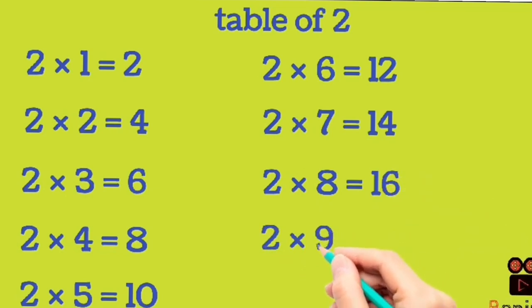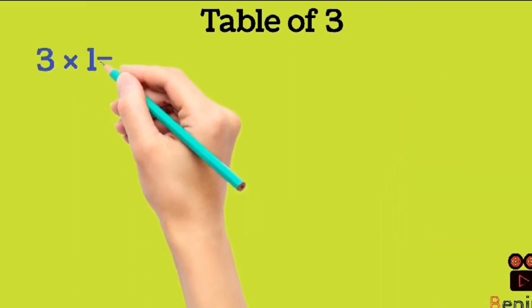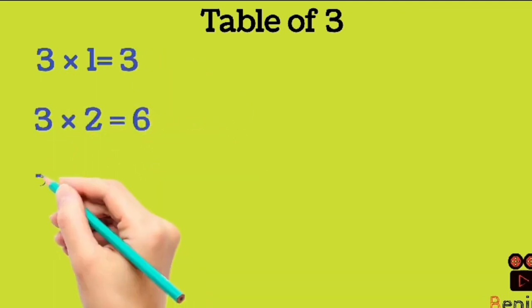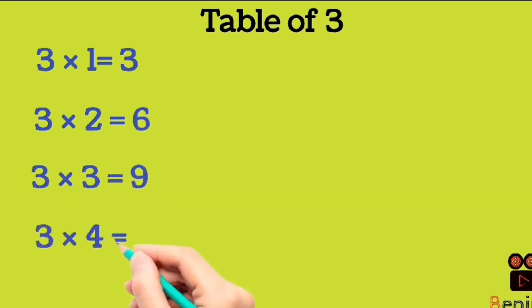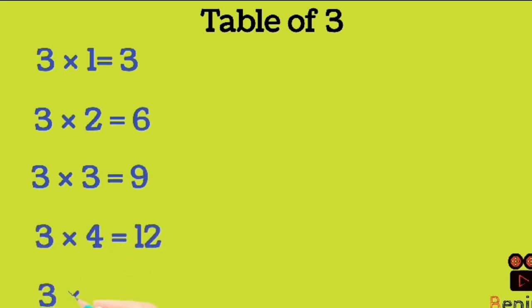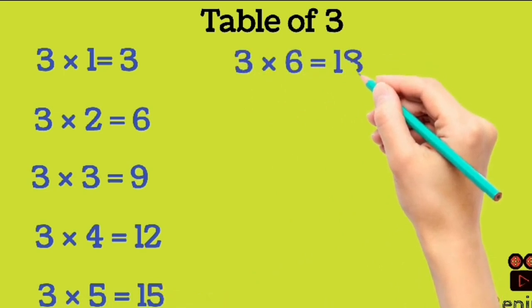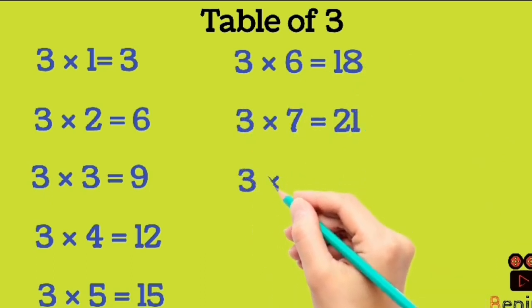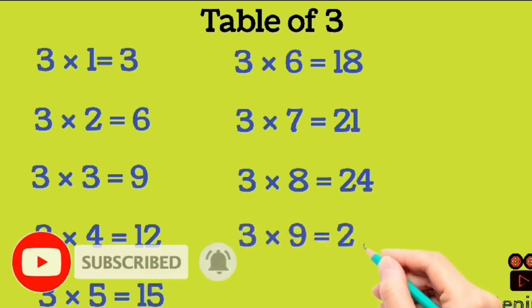2 9's are 18. 2 10's are 20. Table of 3. 3 1's are 3. 3 2's are 6. 3 3's are 9. 3 4's are 12. 3 5's are 15. 3 6's are 18. 3 7's are 21. 3 8's are 24. 3 9's are 27. 3 10's are 30.